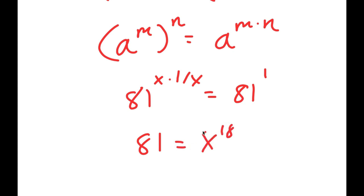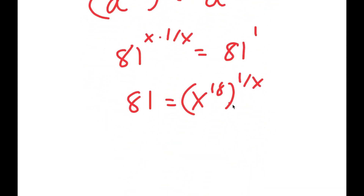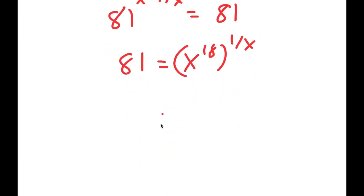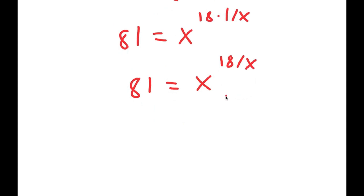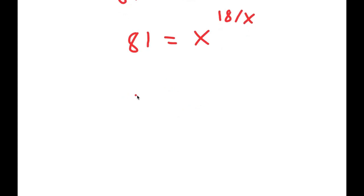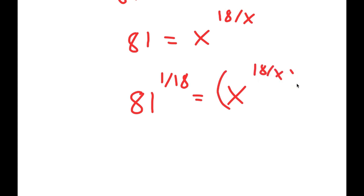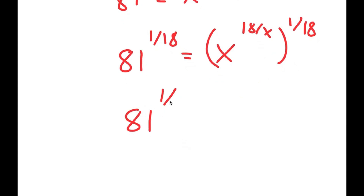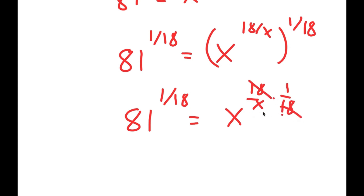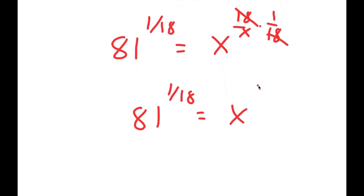So I get 81 is equal to x to the power of 18 to the power of 1 over x. And x to the power of 18 to the power of 1 over x is the same thing as x to the power of 18 times 1 over x, which is x to the power of 18 over x. Now I'm going to take the power of 1 over 18 on both sides, giving me 81 to the power of 1 over 18 equals x to the power of 18 over x times 1 over 18. The two 18s cancel, so I get 81 to the power of 1 over 18 equals x to the power of 1 over x.